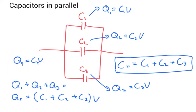The charge on the first one will equal C1 times V. The charge on the second capacitor will equal C2 times V. The charge on the third capacitor will equal C3 times V.